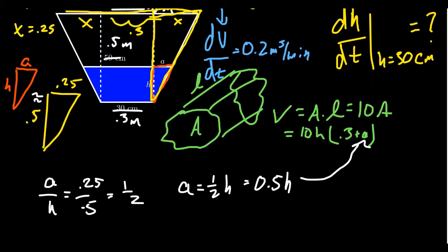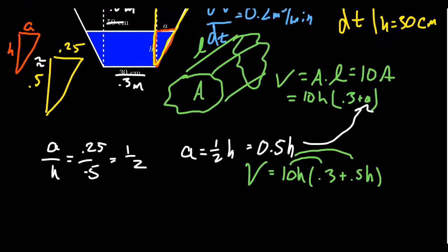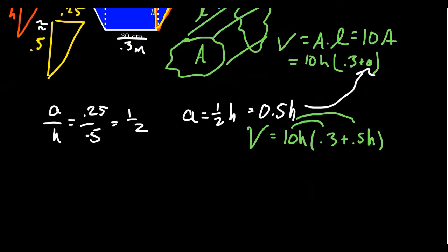We're going to plug this in for A. Therefore, the volume of this trough turns out to be 10H times 0.3 plus 0.5H. I'm going to distribute the 10 through, so we get that the volume equals H times 3 plus 5H. I'm also going to distribute the H through, and so we get 3H plus 5H squared.